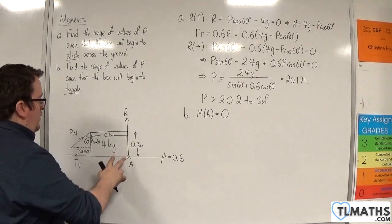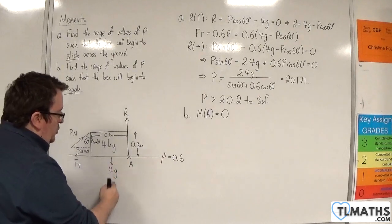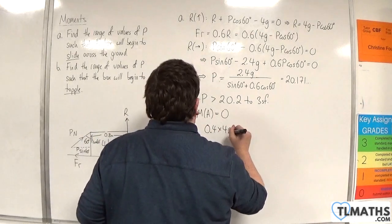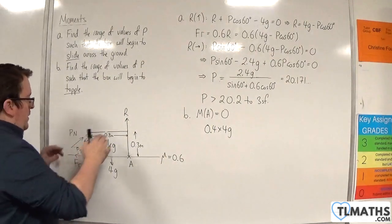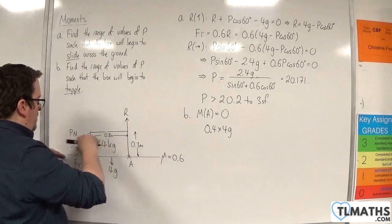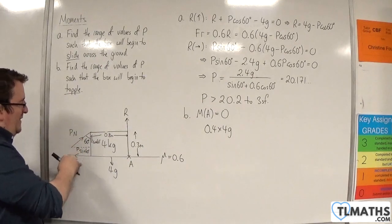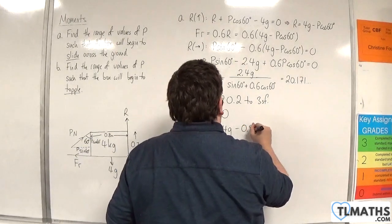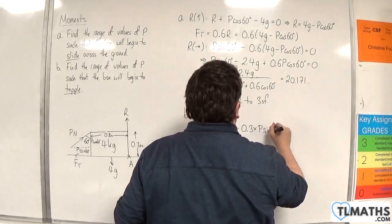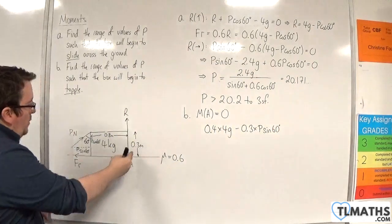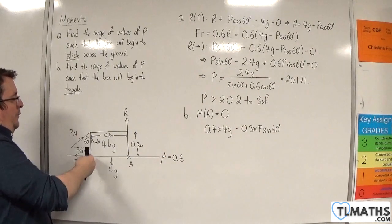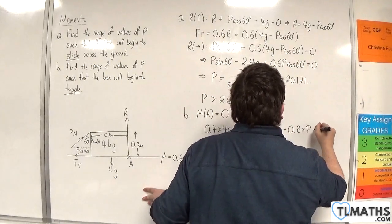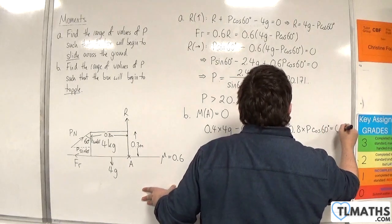We are 0.4 metres away from the 4g force, which acts in an anti-clockwise motion, so that gives 0.4 times 4g. We are 0.3 metres away from the horizontal component P sine 60, which acts in a clockwise motion, so take away 0.3 times P sine 60. And we're 0.8 metres away from P cosine 60, also clockwise, so take away 0.8 times P cosine 60. That equals 0.